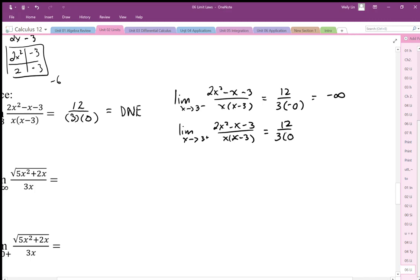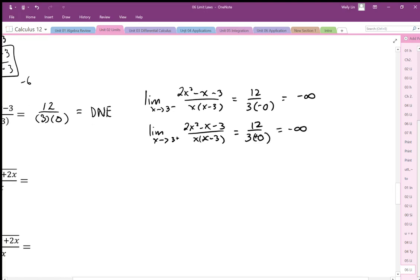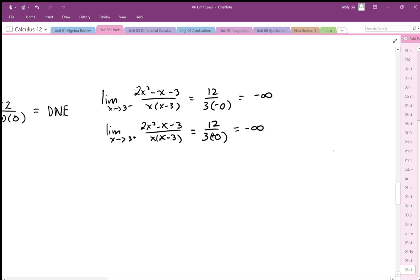If I were to sketch this graph, I have a vertical asymptote at 3, and because it's looking different from this side, it's going up this way and down this way. At x equals 3, we have to say that as a two-sided limit it doesn't exist.